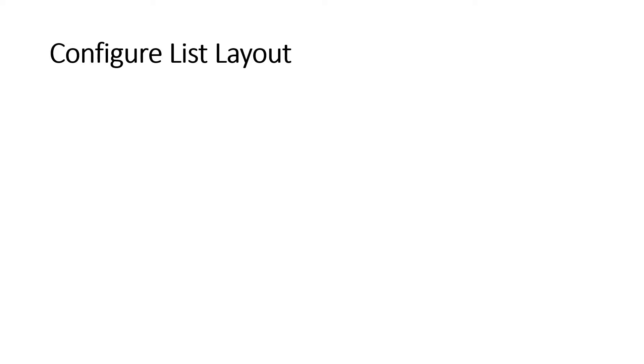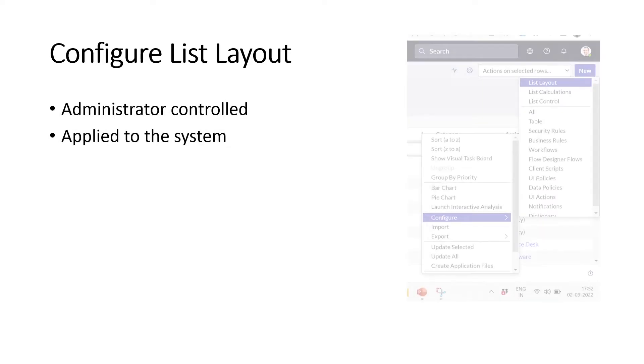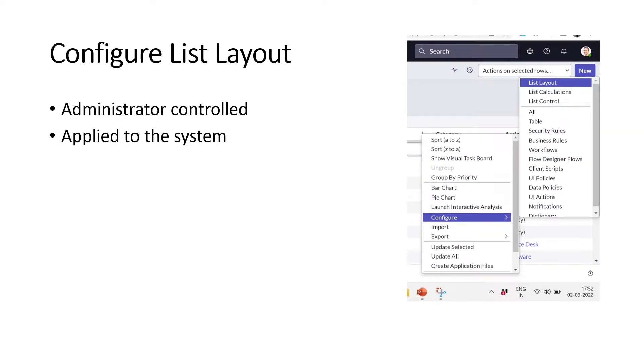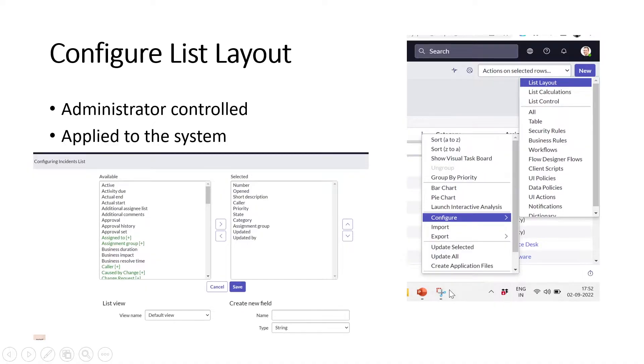Configure list layout is controlled by the administrator. If an administrator configures something in the list layout — adds or removes a field — that applies to the whole system. You can still personalize on top of that for your own view. To configure the list layout, go to the column options menu, then configure, then list layout.